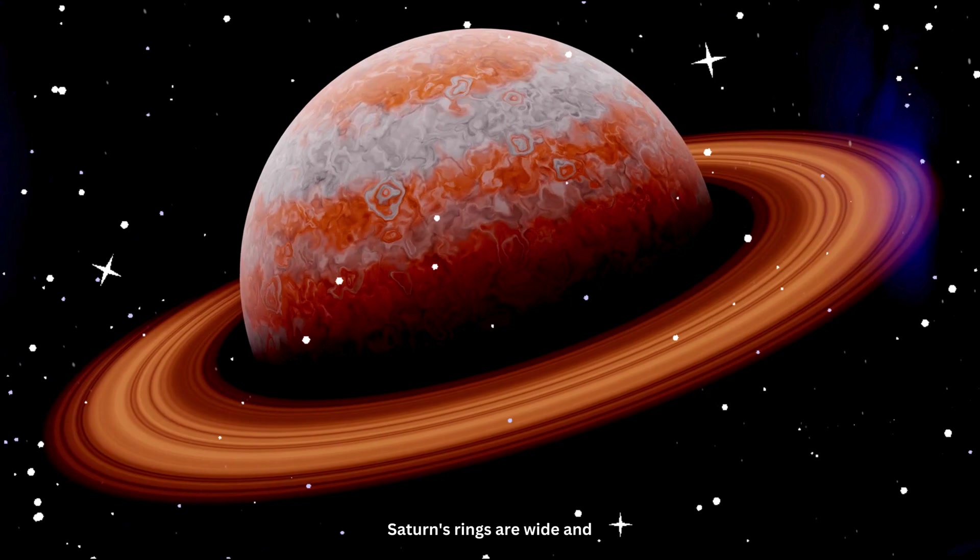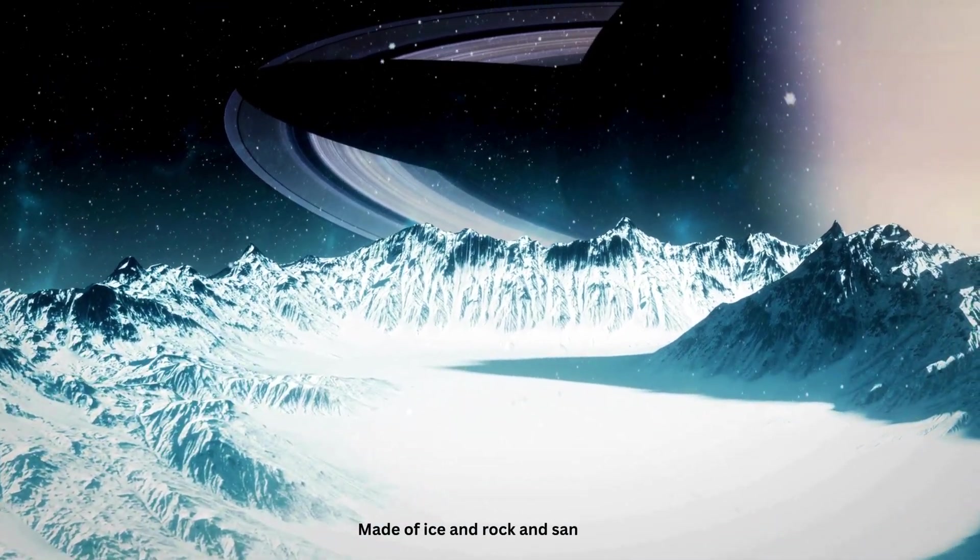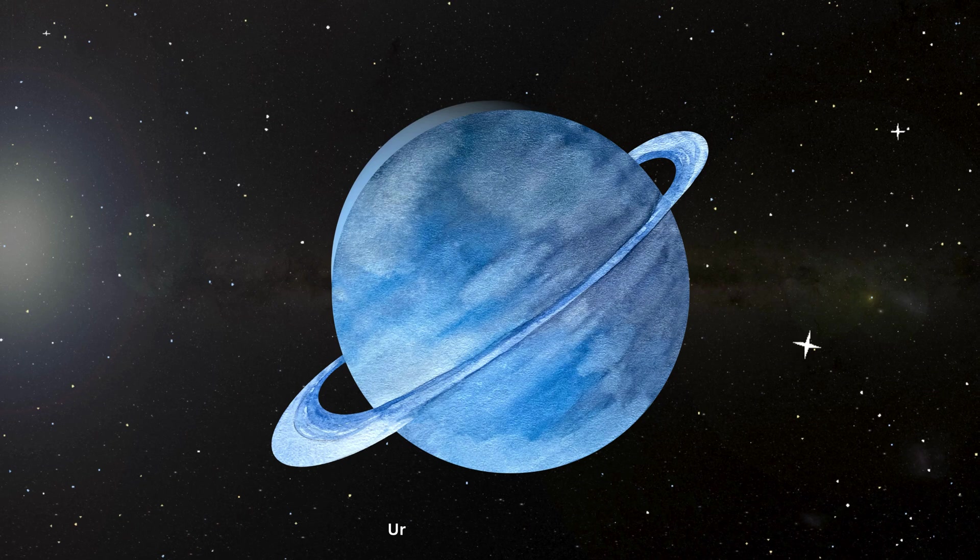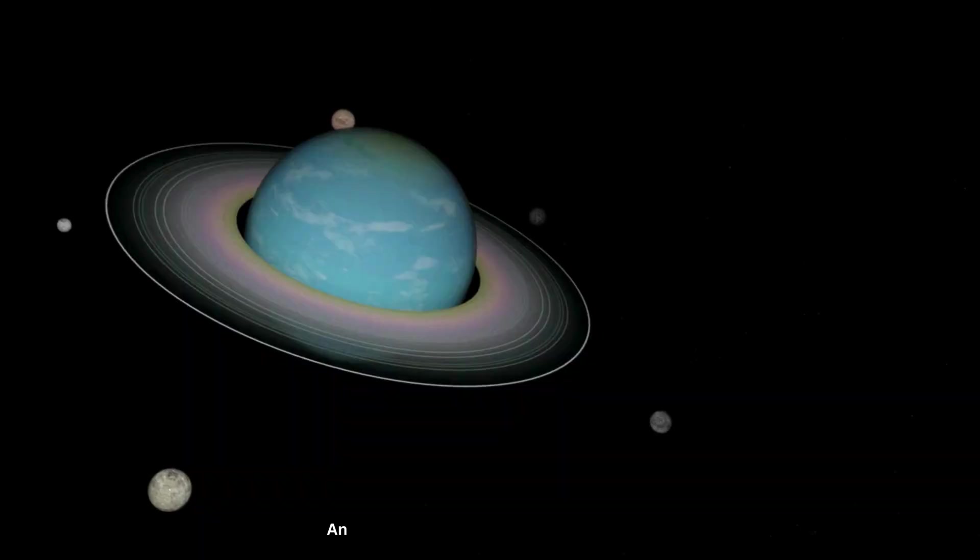Saturn's rings are wide and grand. Made of ice and rock and sand. Uranus tilts, it spins so cool. An icy giant in a cosmic pool.